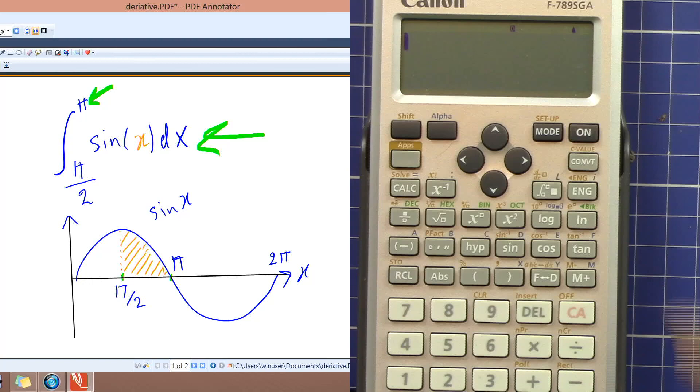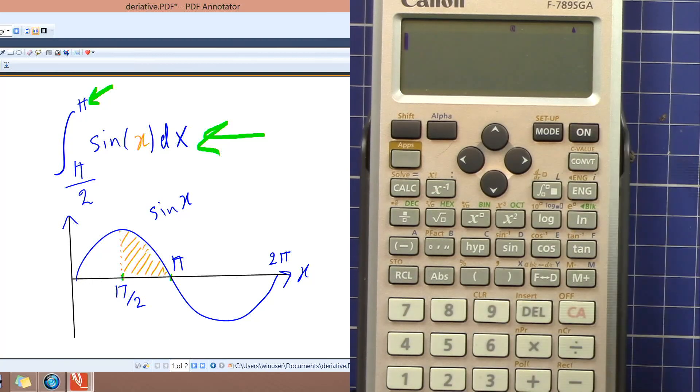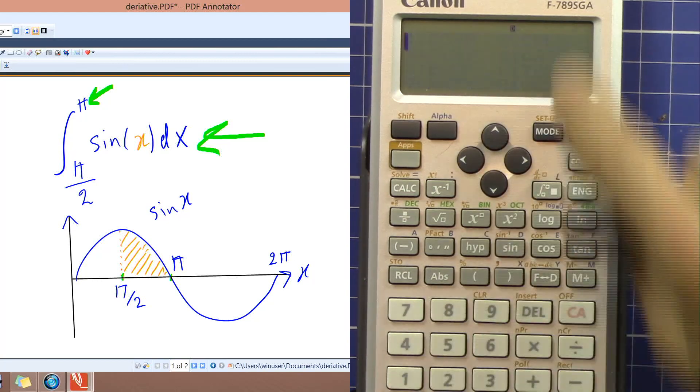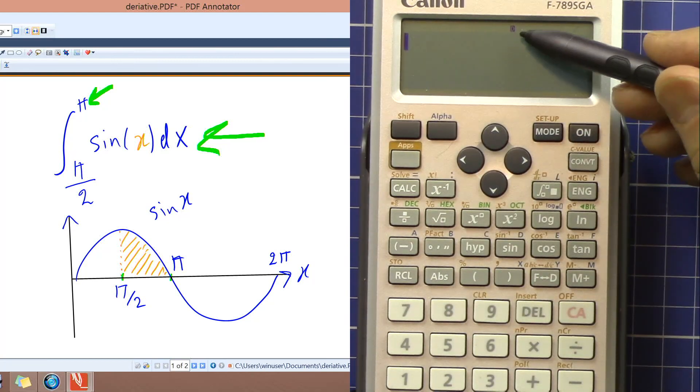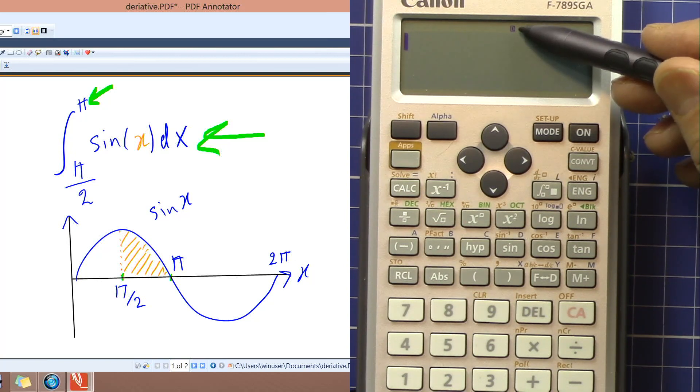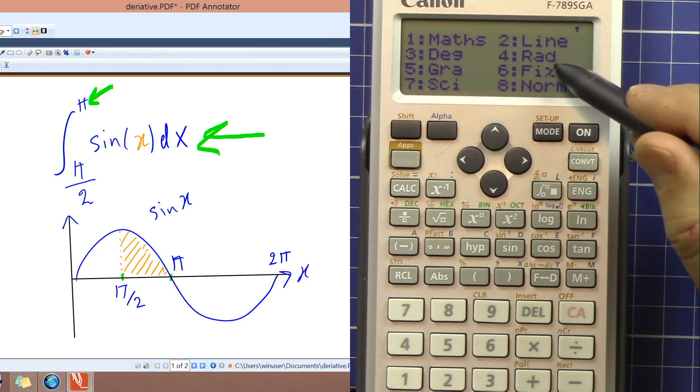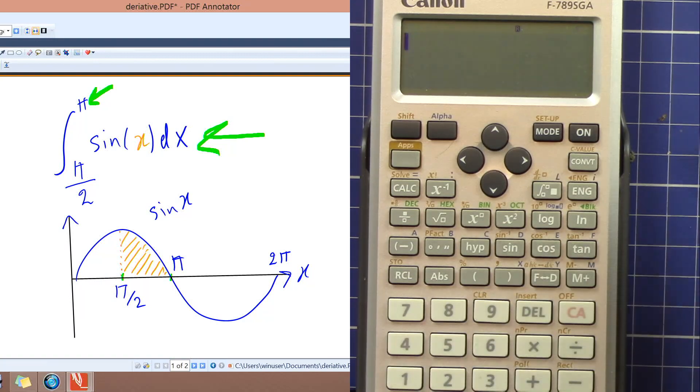So the calculator must be in normal mode. Press mode and then 1, so that's in normal. This angle is a determining factor of your value. Now this one is in degree, but as you can see my angle is in radian, so let's change that. Press shift, setup, and then 4 for radian. Now we will see R.